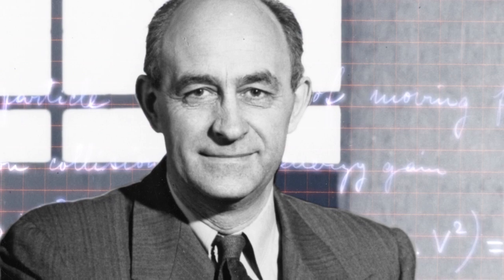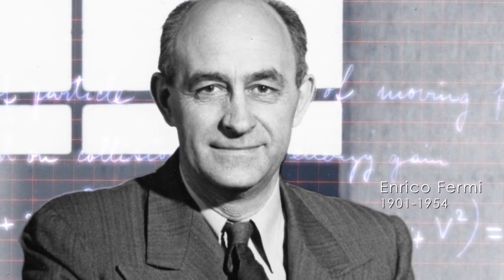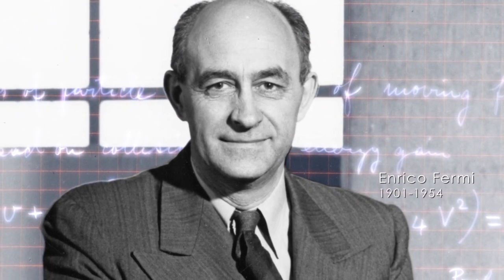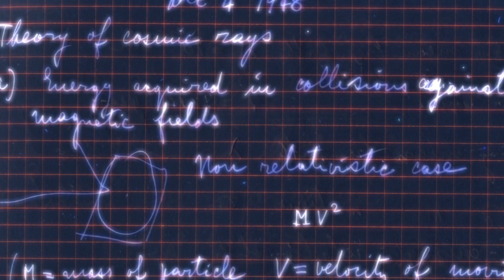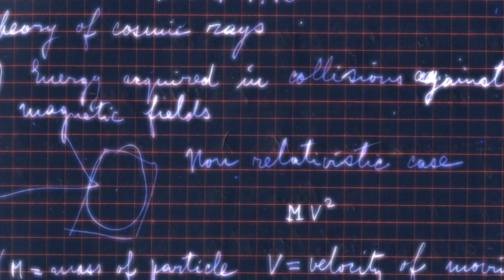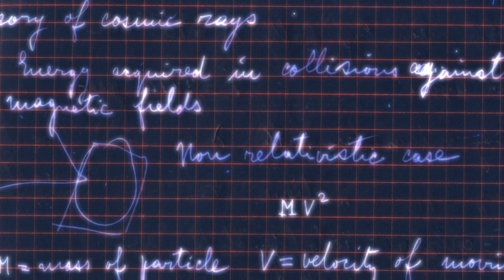In 1949, physicist Enrico Fermi worked out how what he called magnetized clouds could accelerate cosmic rays. Later studies showed that a variant of his method, called Fermi acceleration, worked especially well in supernova remnants.